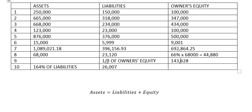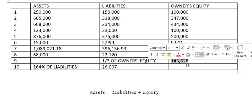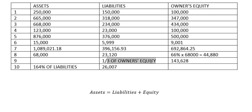This one is one-third of Equity, so we take this one and multiply by one over three, and we got the final answer. Now we want to find total Assets, which means this one plus this one, and the final answer is one hundred ninety-one thousand, five hundred four.